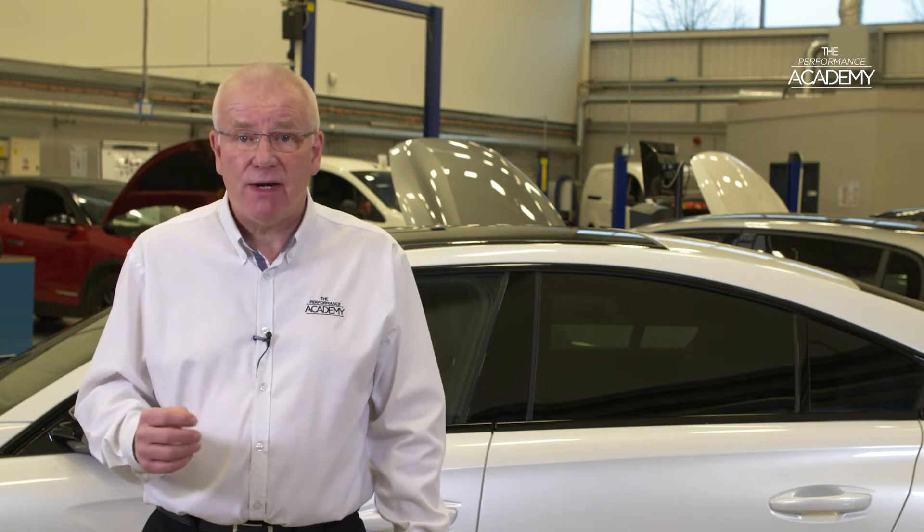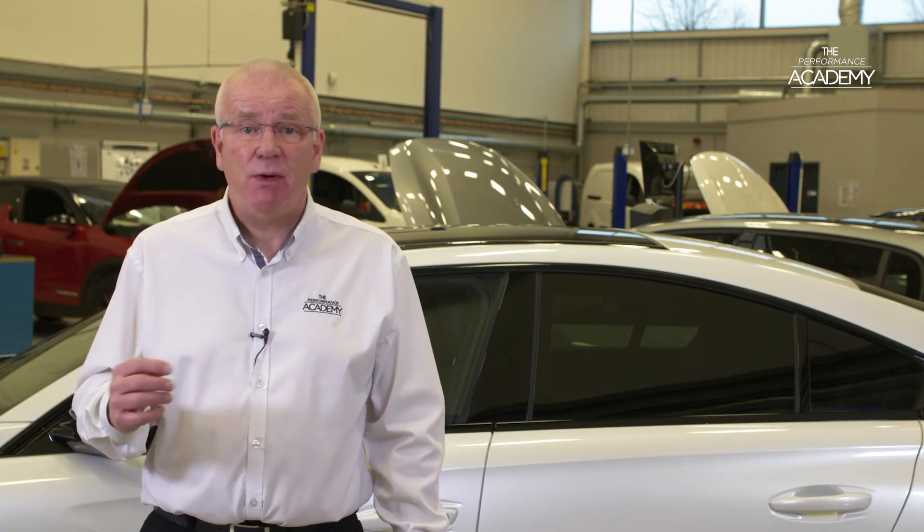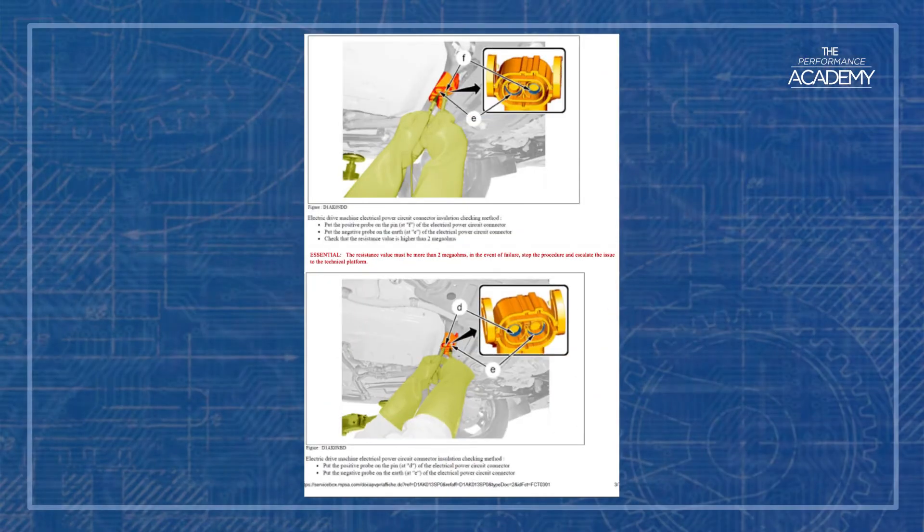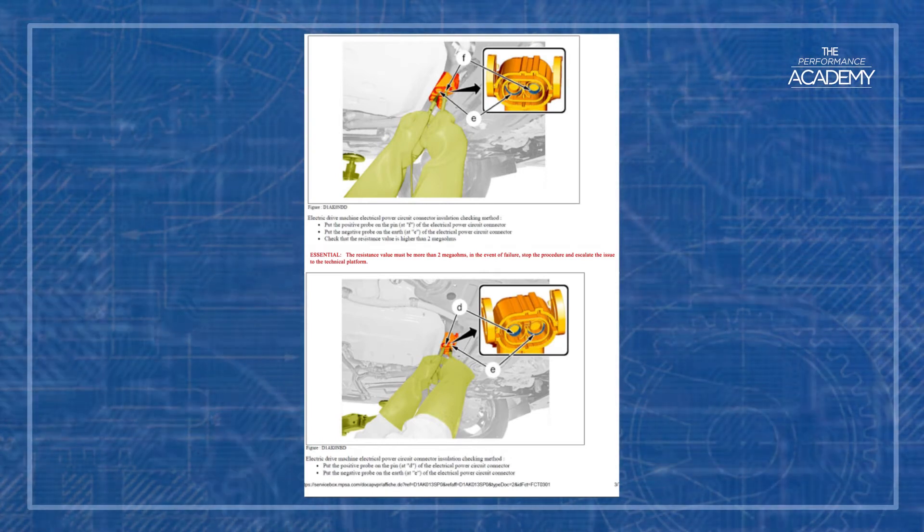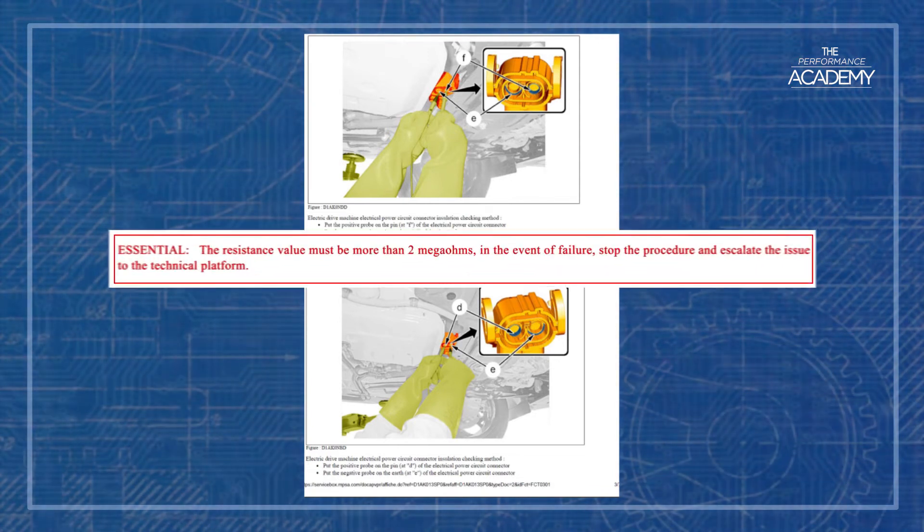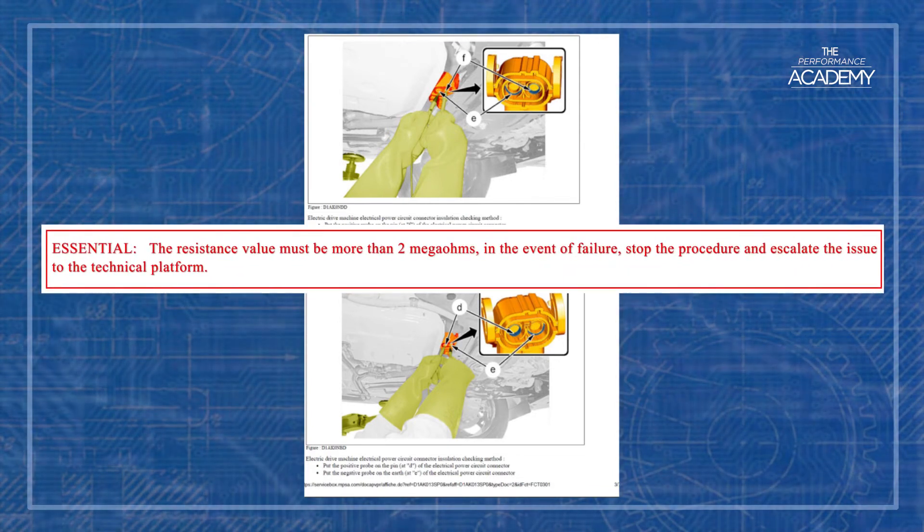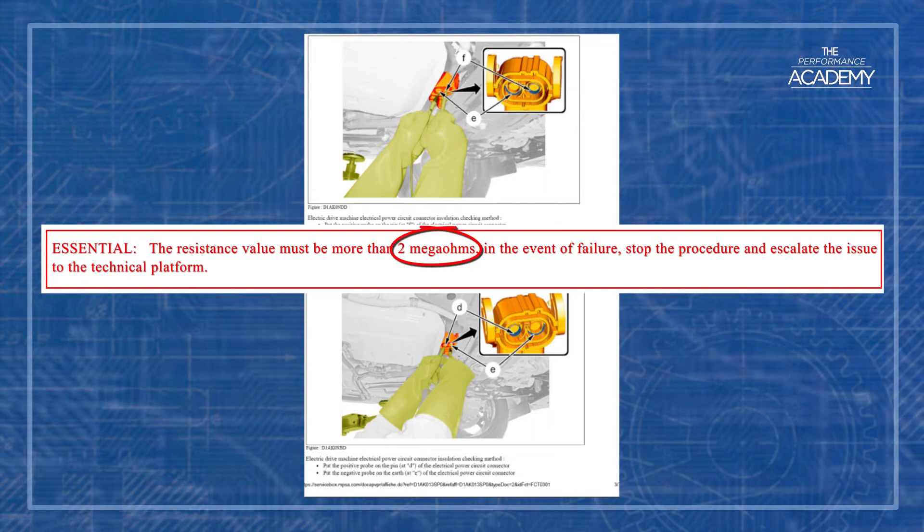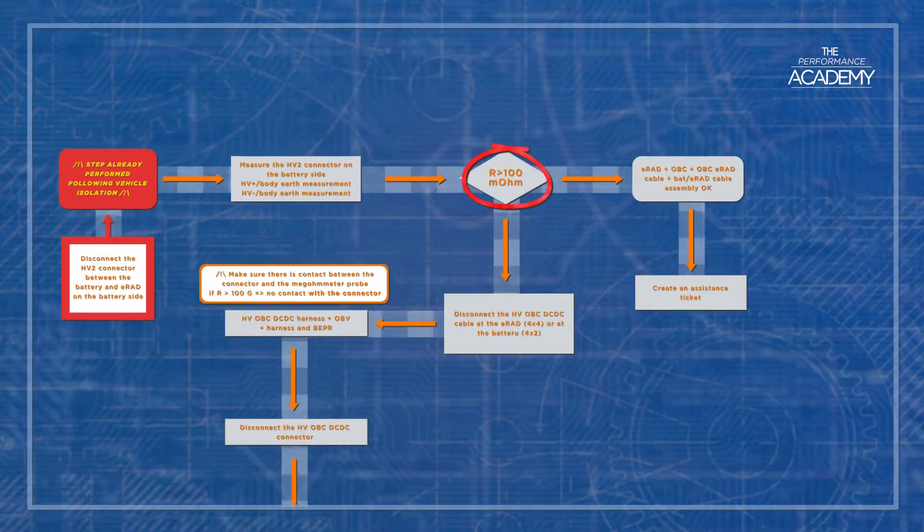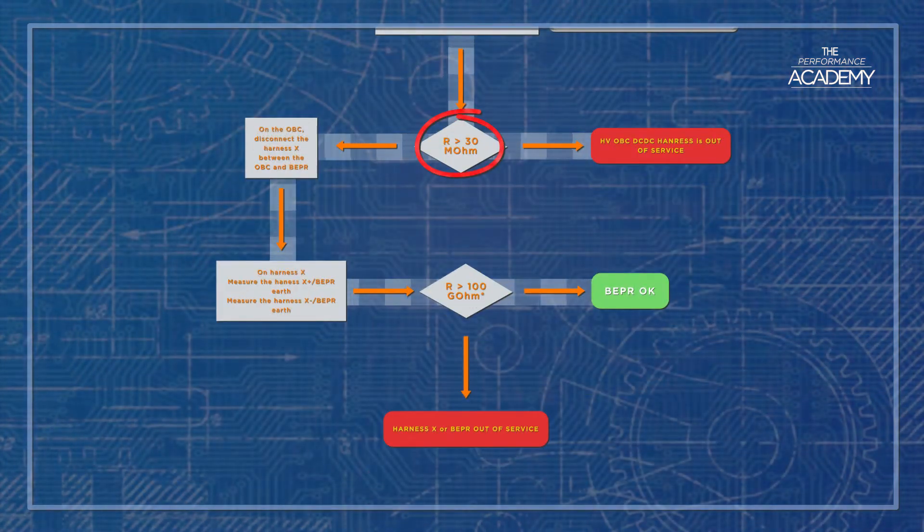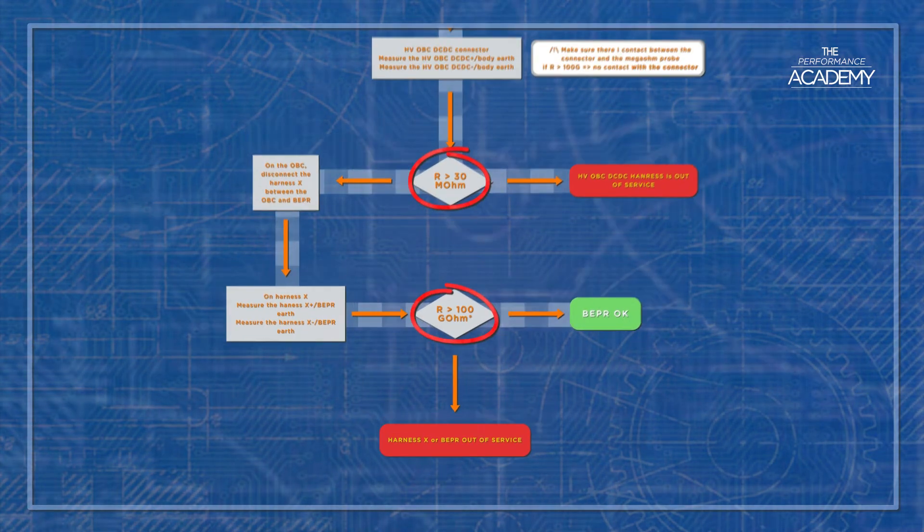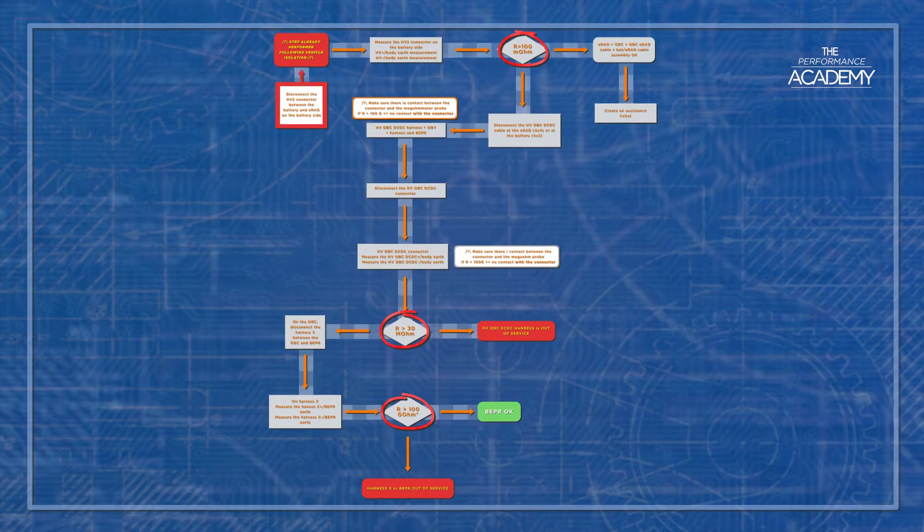For electric vehicle insulation test purposes PSA will give a resistance value for the specific circuit or component to be tested. This resistance value is a threshold value or reading below which any actual test results must not drop, for example not less than 2 mega ohms. The insulation test resistance threshold values PSA provides are normally in the mega ohms when testing high voltage component insulation or the insulation integrity of the complete high voltage drive line.